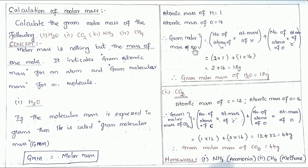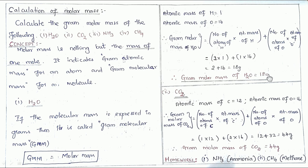How many hydrogen atoms do we have in water? Two. So: (number of H atoms × atomic mass of H) + (number of O atoms × atomic mass of O). Number of hydrogen is 2, atomic mass of hydrogen is 1; number of oxygen is 1, atomic mass of oxygen is 16. So: 2×1 + 1×16 = 2 + 16 = 18 grams. So 18 grams is the gram molecular mass of water, which equals the gram molar mass of water. When we express the gram molecular mass in grams, we call it the gram molar mass.